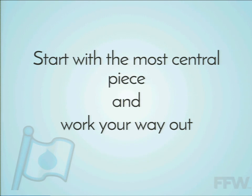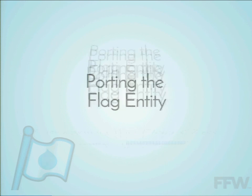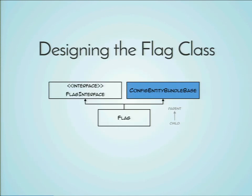After that, identify the most central piece of your module and work your way out. For flag module, that was the flag entity. First we wanted to redesign the flag class with PHP 5 and modern object-oriented programming. So what we did is we created a flag class, but we also created a flag interface. An interface is kind of like a contract for your object — it says this thing will do this stuff. It's not the actual work, but it says this is the promise, these are the things it will get done.